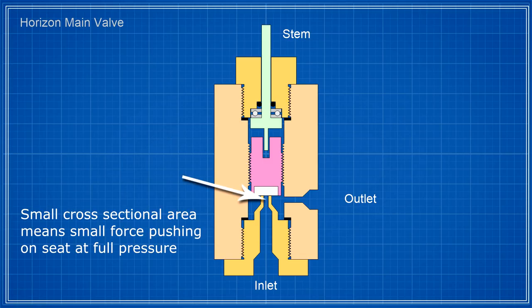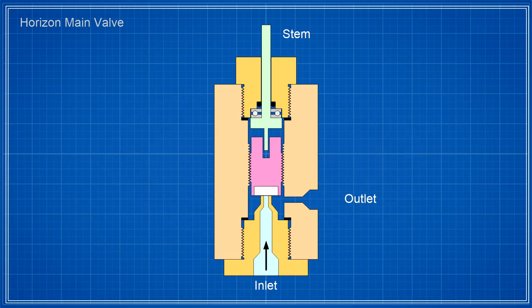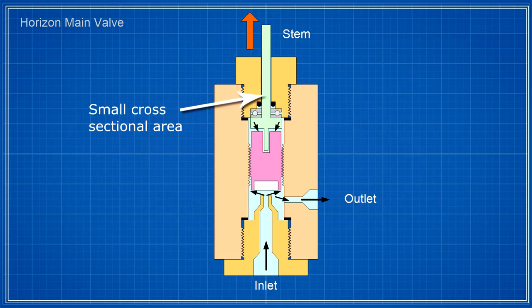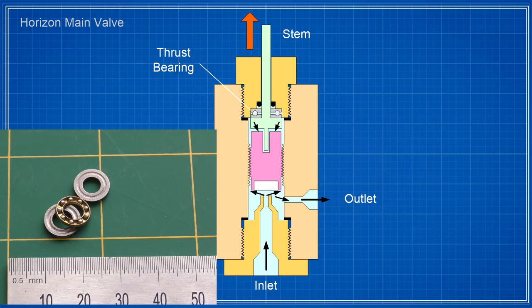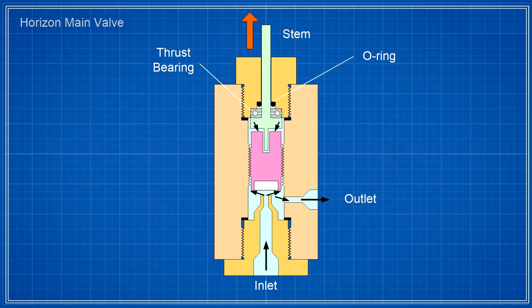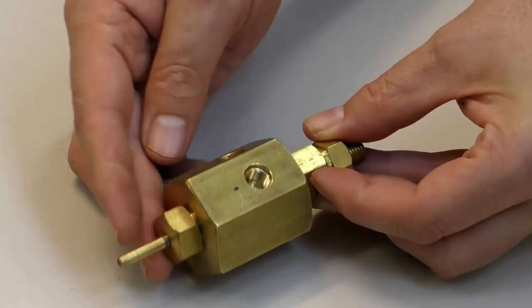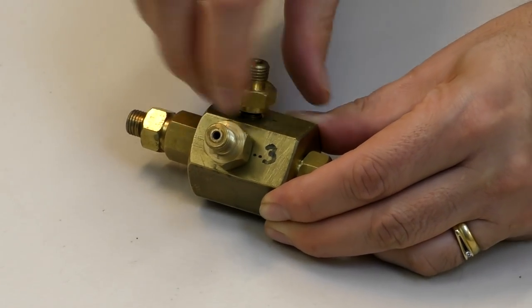When closed, the small orifice ensures that only a small force pushes on the seat making it easy to turn. As soon as the stem turns it rotates the seat, which in turn opens the orifice and the pressure equalizes on both sides of the seat so there's no net force on the seat's thread. Just like in the needle valve, the air pressure tries to push out the stem, but the stem here has a narrow diameter to reduce its cross-sectional area reducing the amount of force on it. It also has a tiny thrust bearing here reducing the rotational friction even further, and an o-ring rather than packing provides the seal. All these considerations makes it very easy to open and close at full pressure.